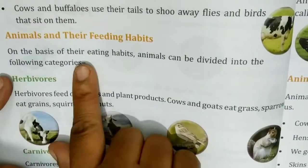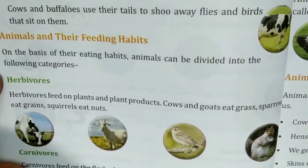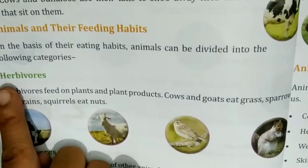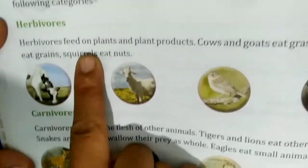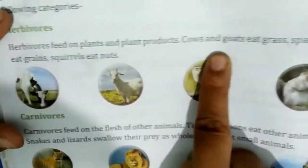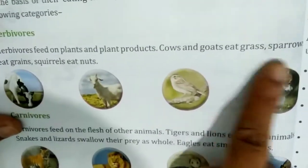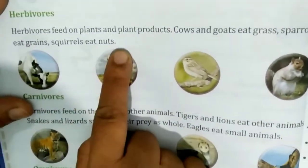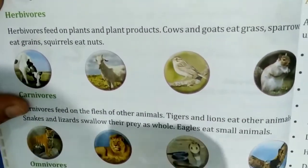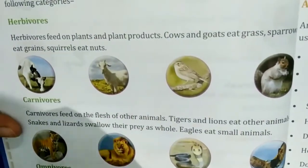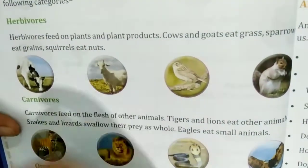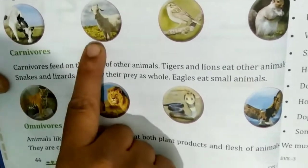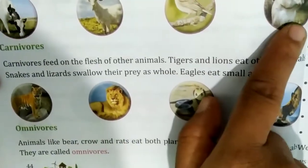Animals and their feeding habits. Herbivorous animals feed on plants and plant products. Cows and goats eat grass, sparrows eat grains, and squirrels eat nuts. They are called herbivorous animals. Examples include buffaloes, goat, sparrow and squirrel.